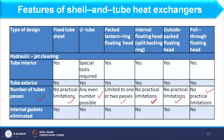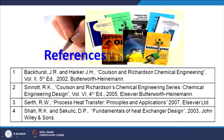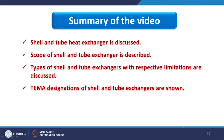So here we have different comparison points for different types of shell and tube heat exchangers, and references are provided for further details. To summarize this lecture: the shell and tube heat exchanger was discussed, its scope described in detail, types of shell and tube heat exchangers with respective limitations were discussed, TEMA designation was explained, and a comparison of different shell and tube heat exchangers based on different factors was presented. That is all for now. Thank you.